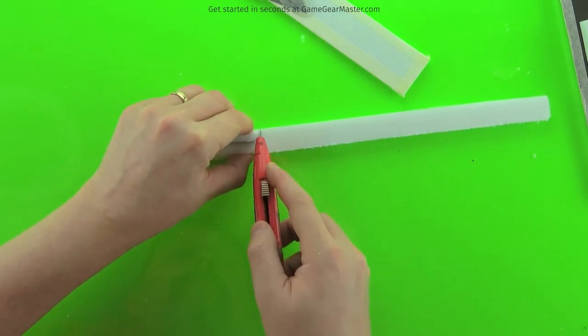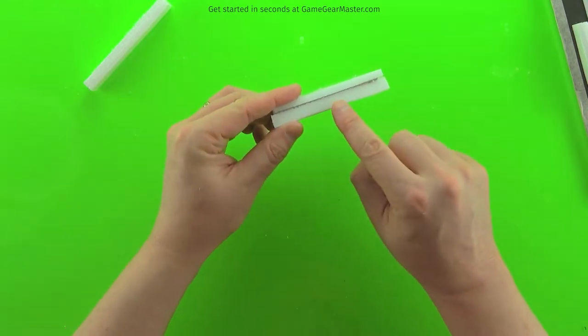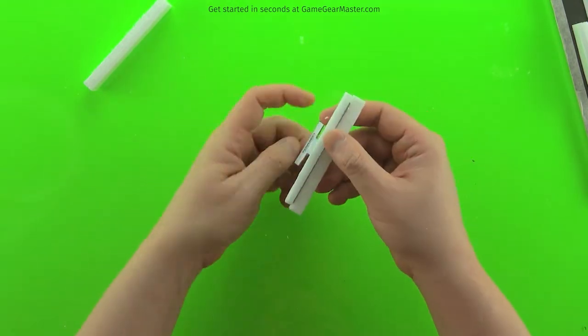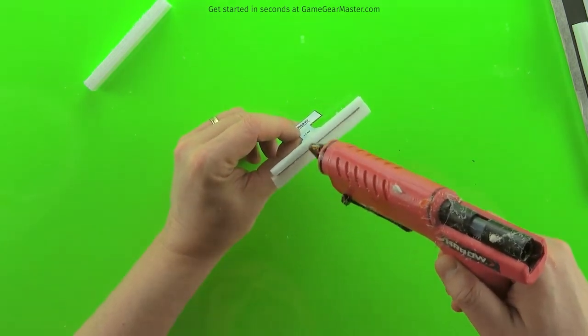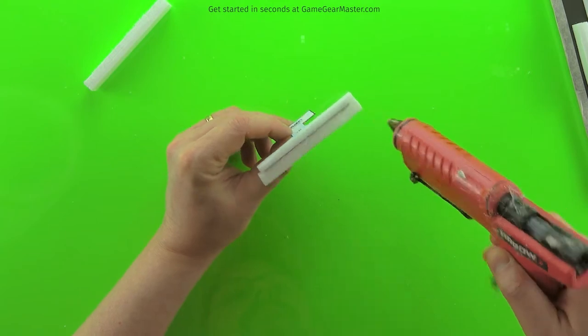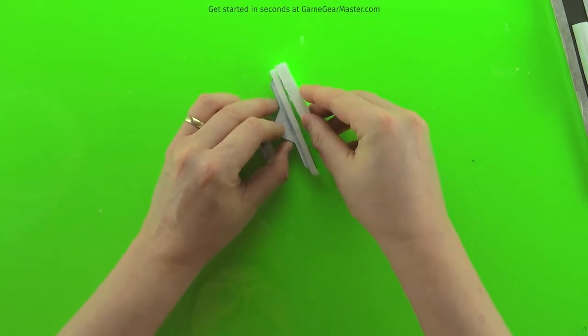Then you're going to glue that on making sure that the thicker of the two sheets of foam board are on the bottom of the border. You want to have that thick piece facing down. Just glue on the exterior decorative border.